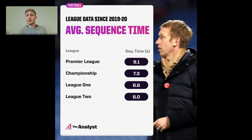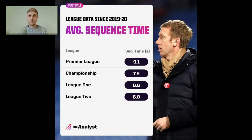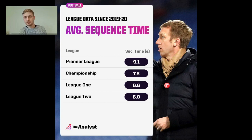It's also worth saying that in the Premier League you've got super teams — probably six or seven others who push that data up because they monopolize the ball. Man City's average sequence time was 15 seconds this week — a lot higher than the league average. But generally speaking, watching a Premier League match, each team will have the ball for a longer period of time before losing it than in other tiers.